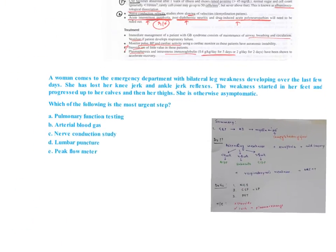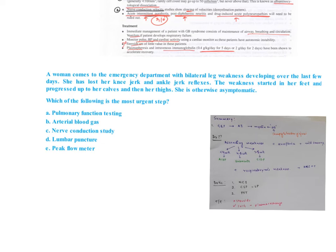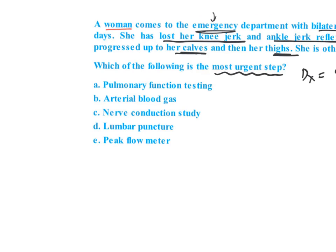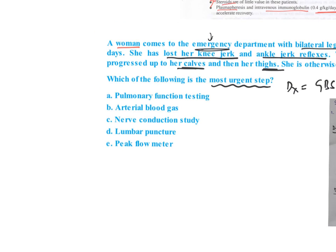Let's discuss a question. A woman comes to emergency with bilateral leg weakness over the last few days - this is acute onset. She has also lost her knee jerk and ankle jerk reflexes. Weakness started in feet, progressing to her calves and then thighs. So this is progressing upward. What is the most urgent step? The diagnosis is GBS - why? Because GBS has acute ascending weakness plus areflexia. Both are important. We are suspecting GBS in the emergency clinic, so what do you have to do?